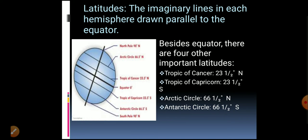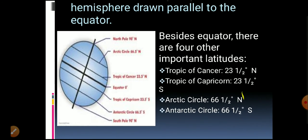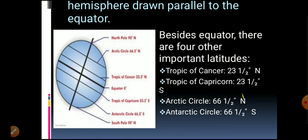Next, we will learn about latitudes. Latitudes are imaginary lines in each hemisphere drawn parallel to the equator. As we can see in the image, the lines that are parallel to the equator are called the parallels of latitude.